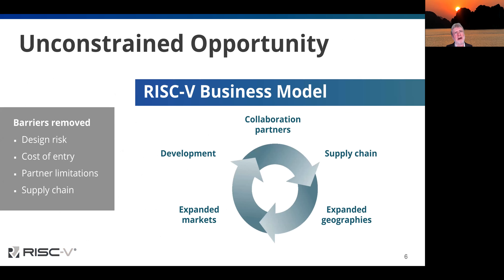We talk about unconstrained opportunity because the business model is really different. The cost of entry is different. There aren't partner limitations or supply chain limitations. You can pick your own vendors, design your own stuff, fab your own stuff, get the tool chain, get device verification. There's a whole ecosystem around us that enables members and implementers to produce things more quickly, with a shorter time to innovation and more choices at their disposal.